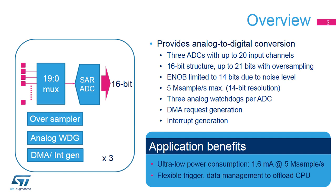The sampling speed is 5 mega-samples per second for 14-bit resolution. Each ADC module integrates an analog watchdog, and the data can be made available either through DMA movement or interrupts. This ADC is designed for low power and high performance. There are a number of triggering mechanisms, and the data management can be configured to minimize the CPU workload.